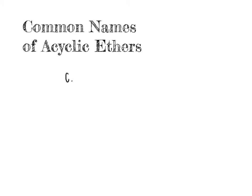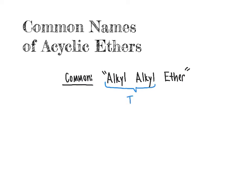Using the common nomenclature system, which is only really applicable toward very simple ethers, we're going to refer to them using the template alkyl alkyl ether, where those two alkyl terms refer to the identities of the two alkyl groups that are directly bonded to the oxygen. So for example, propyl, methyl, ethyl, isopropyl, isobutyl, etc. — these are the two identities of the alkyl groups that come off of the oxygen.